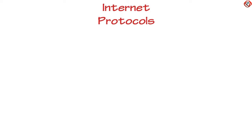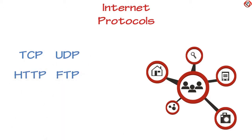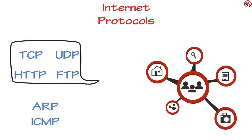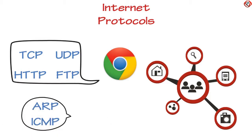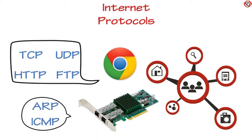Internet Protocols are needed for proper functioning of the Internet and include TCP, UDP, HTTP, FTP, ARP, and ICMP. TCP, UDP, HTTP, and FTP interact with applications like a Web Browser, while ARP and ICMP interact with Network Adapters or NICs.